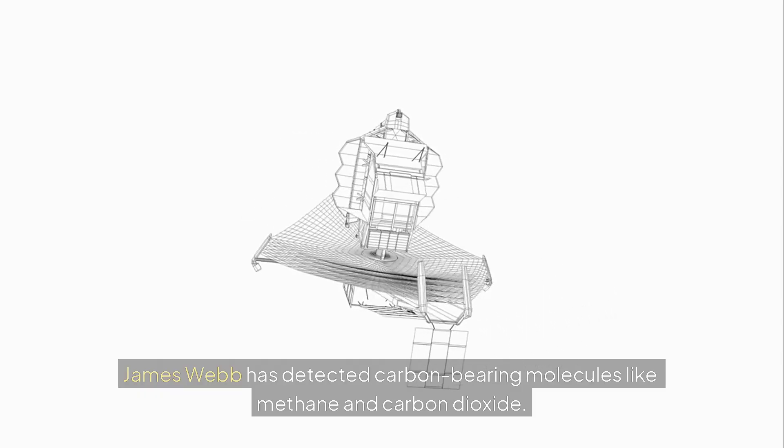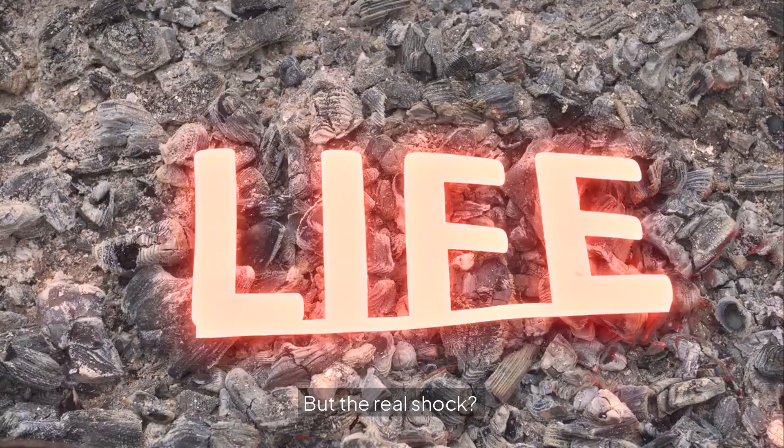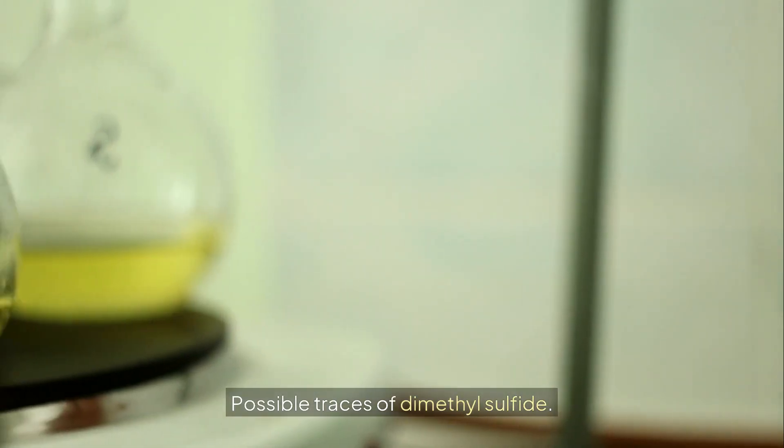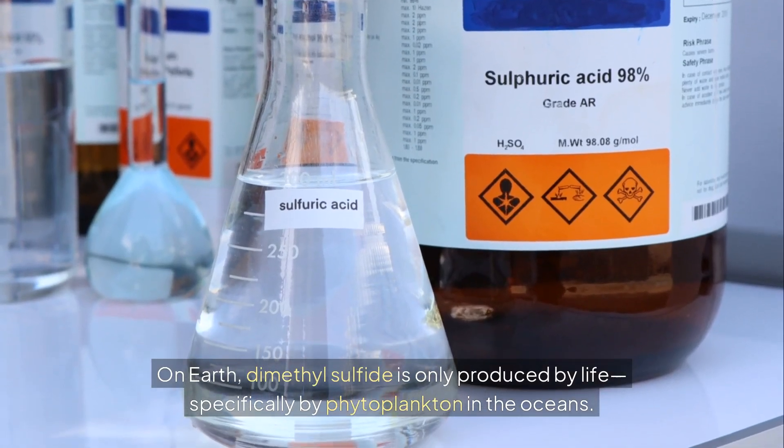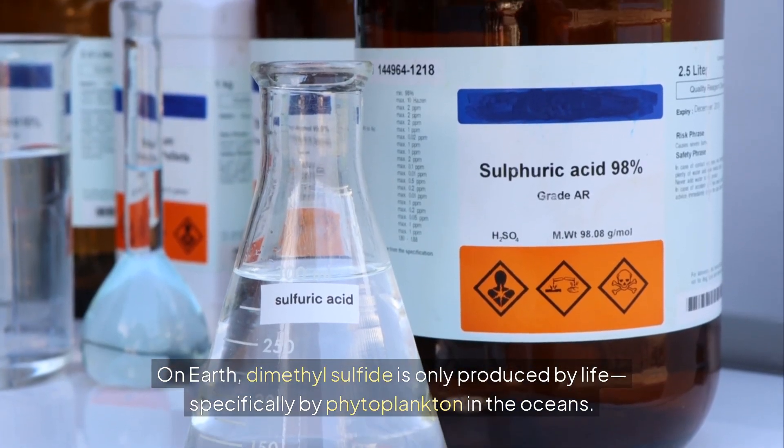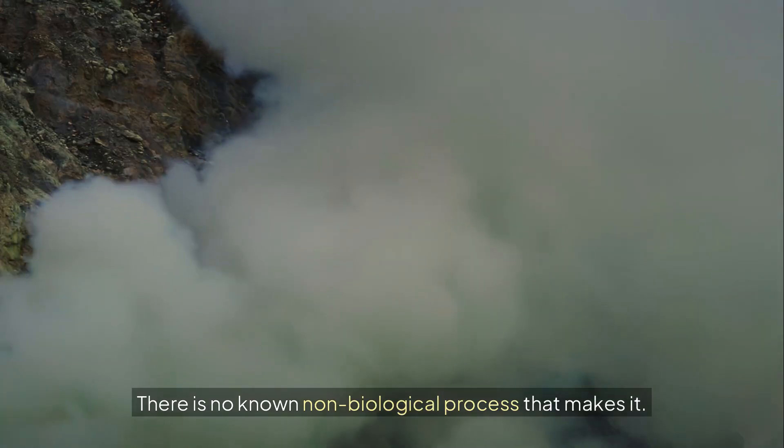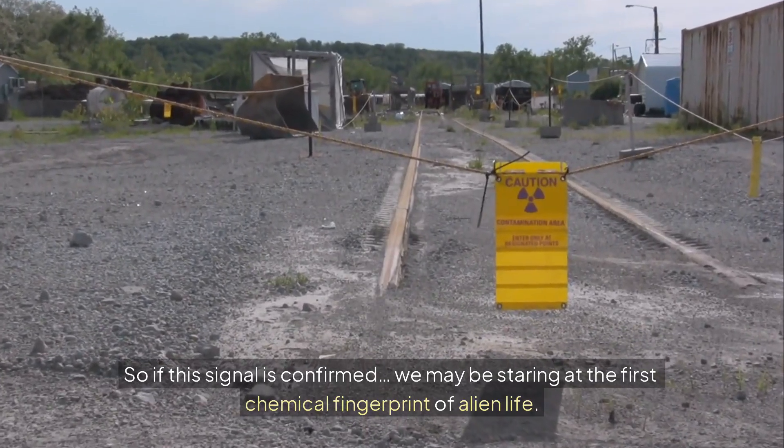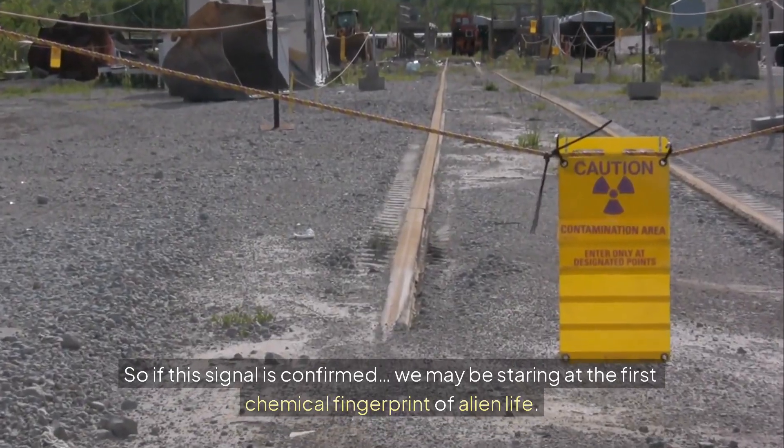But size and location alone don't make a planet habitable. What makes K-218b fascinating is what's in its air. James Webb has detected carbon-bearing molecules like methane and carbon dioxide. But the real shock, possible traces of dimethyl sulfide. On Earth, dimethyl sulfide is only produced by life, specifically by phytoplankton in the oceans. There is no known non-biological process that makes it. So if this signal is confirmed, we may be staring at the first chemical fingerprint of alien life.